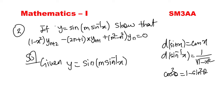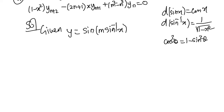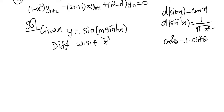Now let's look at this problem with the basic concept. Let's differentiate with respect to x. When y is differentiated once, we get y1. When y1 is differentiated, we get y2. This is the process.